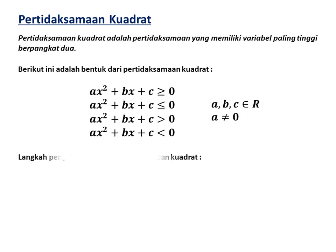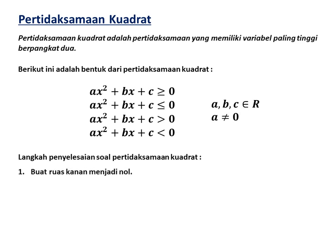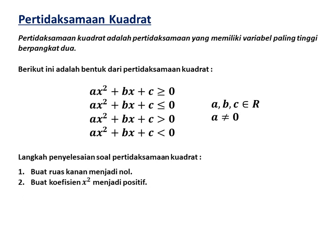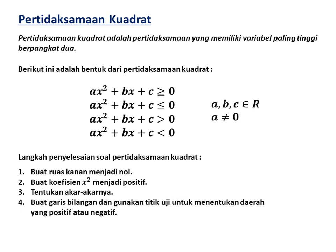Langkah penyelesaian soal pertidaksamaan kuadrat: Pertama, buat ruas kanan jadi 0. Kedua, buat koefisien X² menjadi positif untuk mempermudah penentuan akar-akarnya. Ketiga, tentukan akar-akarnya. Keempat, buat garis bilangan dan gunakan titik uji untuk menentukan daerah yang positif atau negatif. Yang terakhir, tentukan himpunan penyelesaiannya berdasarkan garis bilangan.